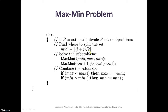Mid equals (i + j) / 2. Invoke the max-min function for the first half of the array with parameters (i, mid, max, min), and again invoke max-min for the second half with parameters (mid+1, j, max1, min1). The first call finds the solution for the first sub-array and the second for the second sub-array. Then compare: if max is less than max1, set max equal to max1. If min is greater than min1, set min equal to min1. This is the divide and conquer technique.